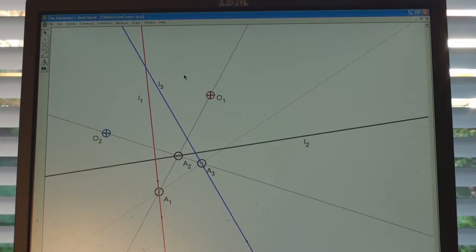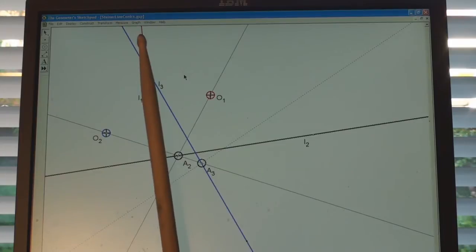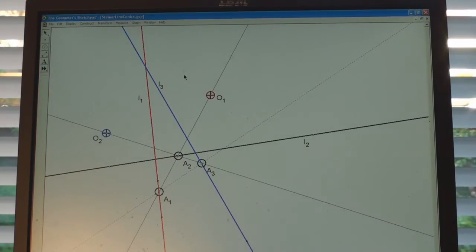This Geometer's Sketchpad worksheet shows us the effect of our projectivity between points on L1 and points on L3. That projectivity is accomplished by two perspectivities.